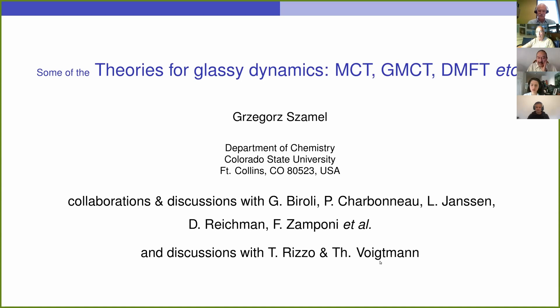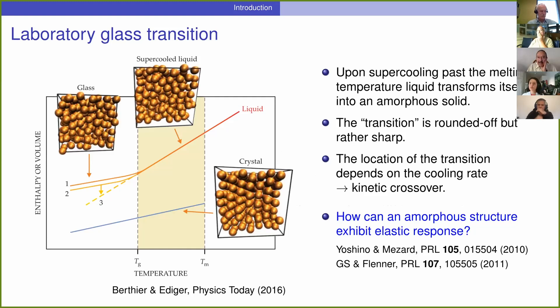I would also like to acknowledge discussions with my fellow speakers in this session, Tommaso and Tomas. The title of today's session is Unified Theoretical Description of the Glass Transition. I will be mostly talking about the dynamics, but I should start by reminding everybody that there are interesting phenomena that happen outside of the dynamics. The glass transition as encountered in the lab consists of forming an amorphous solid when a liquid is supercooled past its melting temperature. The transition to this amorphous solid is a little bit rounded off but still rather sharp, and the location of the transition depends on the cooling rate. So this putative transition is really a kinetic crossover.